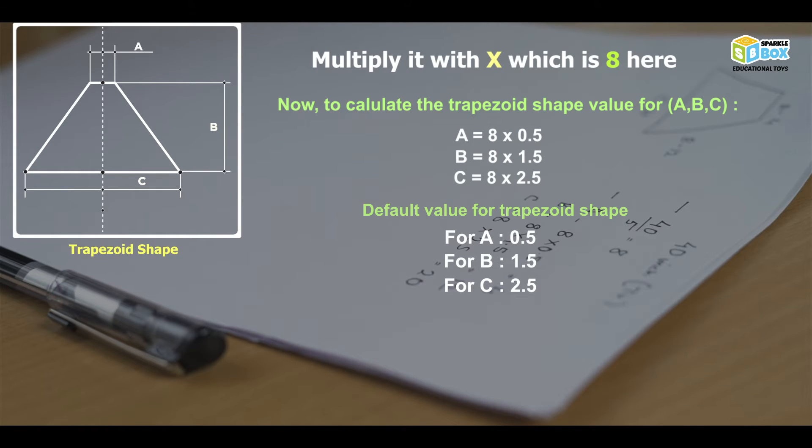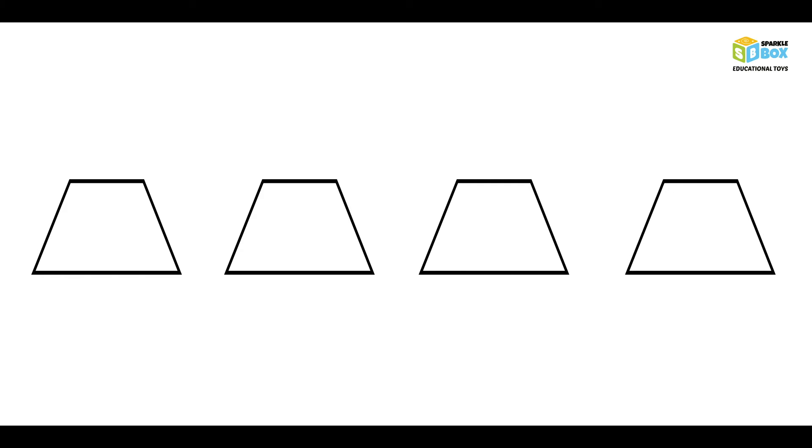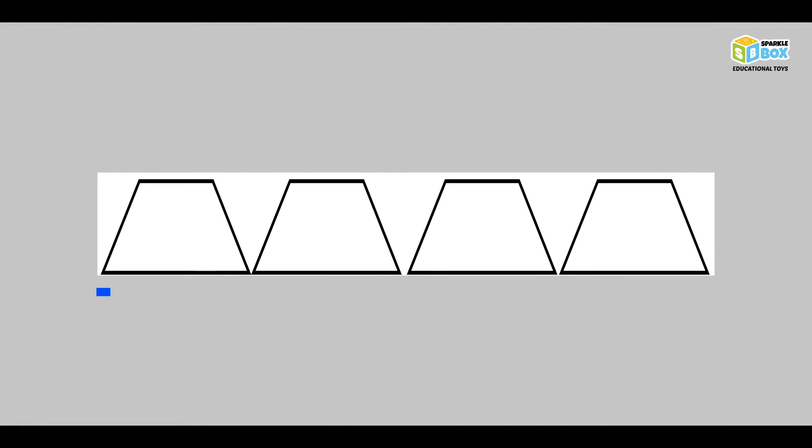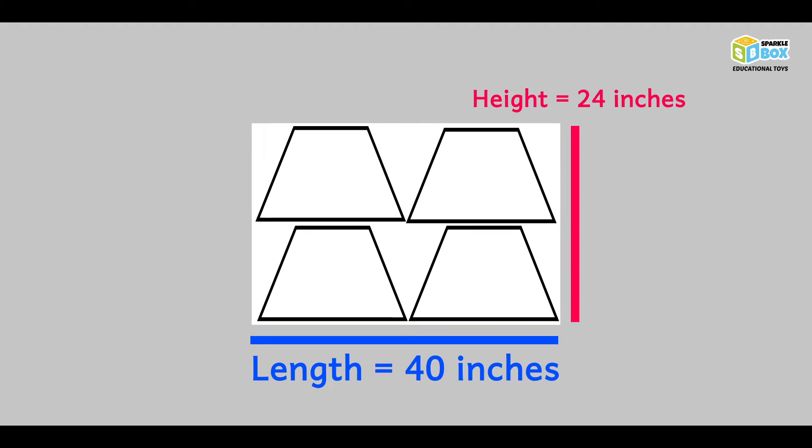Now, let's continue with our values a, b and c, which are 4, 12 and 20 inches respectively. Now, it's time to find the measurement of the required acrylic sheet. As we discussed earlier, we need 4 trapezoid panels for the hologram. Trapezoid base length, that is c, is 20 inches. So, sheet length will be 20 into 4, that is 80 inches. And the height of the trapezoid is 12 inches. Therefore, at a minimum, the required acrylic sheet must be of dimensions 80 inches in length and 12 inches in breadth. Or, 40 inches in length and 24 inches in breadth.